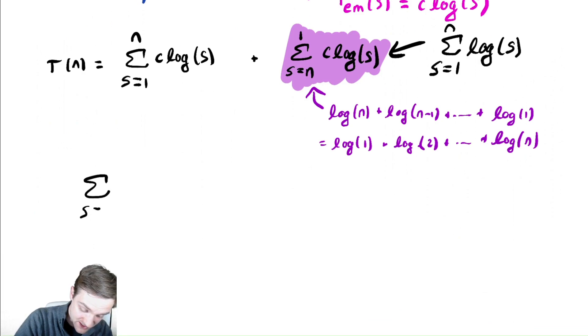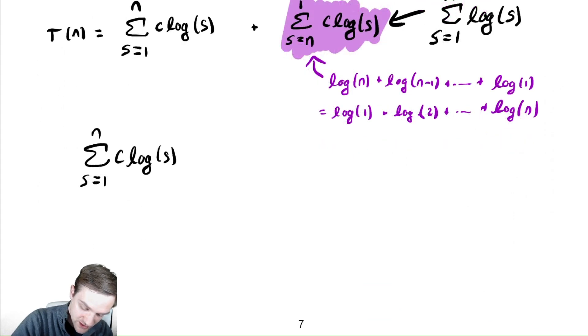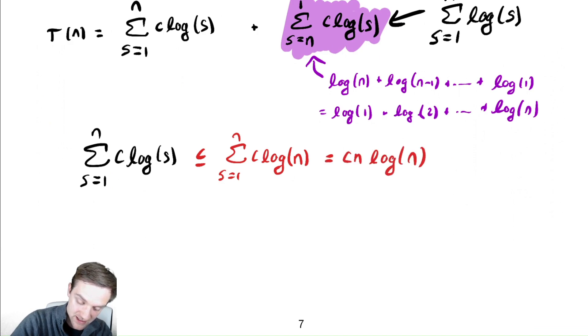The sum from s is equal to 1 to n of c times log of s. To bound this above, I'm going to take the summation and replace the value of s with the largest it ever gets because it is an increasing function of s. So, this is equal to c n log of n. That's nice and easy.